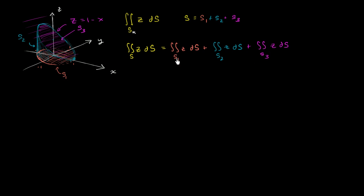Let's start with surface S1. There's actually a very fast way to handle this surface integral, especially because we're taking the surface integral of z. What value does z take on throughout this filled-in unit circle? Well, that surface is on the xy-plane, so z equals 0. You're essentially integrating 0 — 0 times dS is just 0. So this whole thing evaluates to 0. It's always important to look out for things like that so you don't waste time parametrizing unnecessarily.